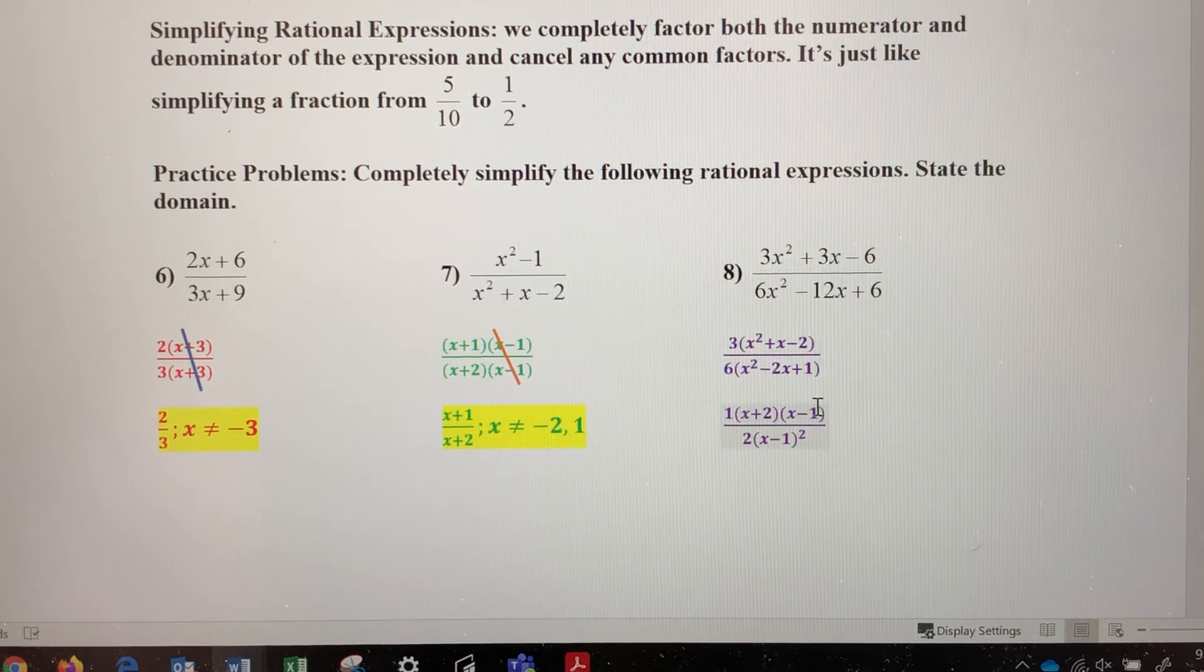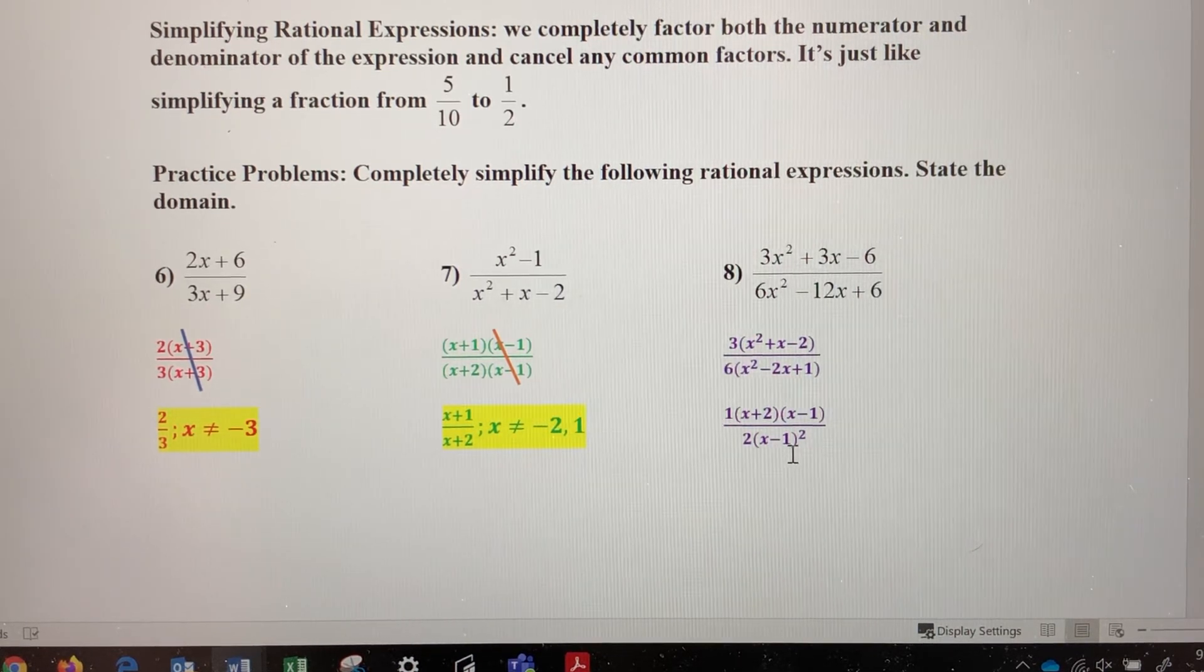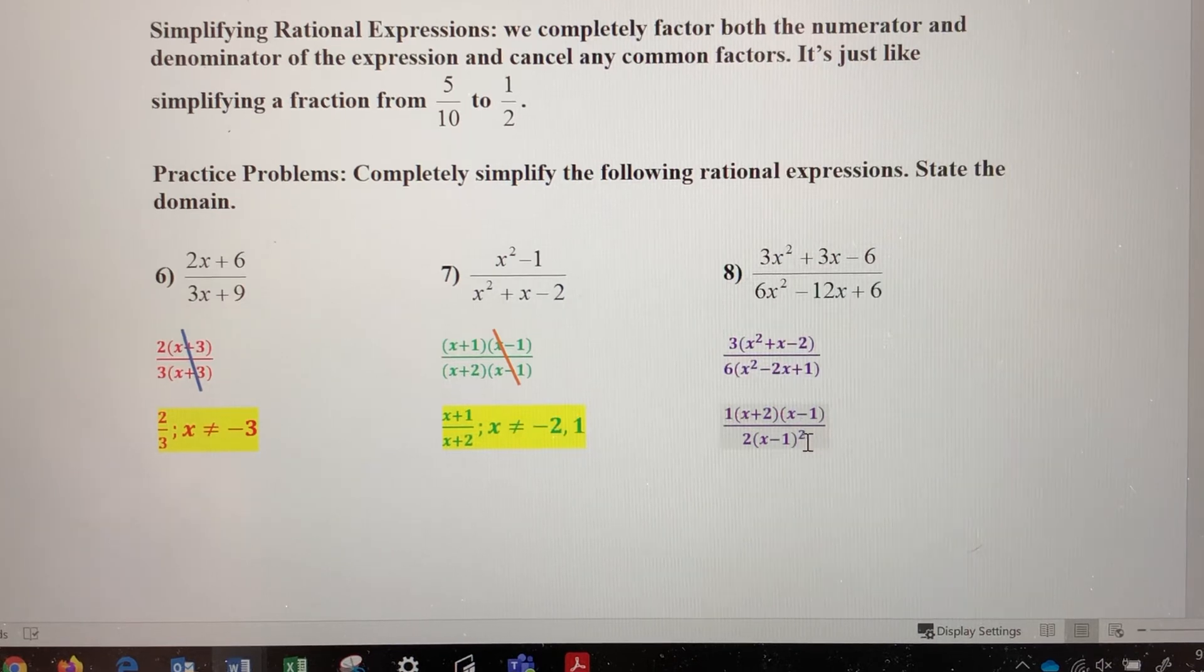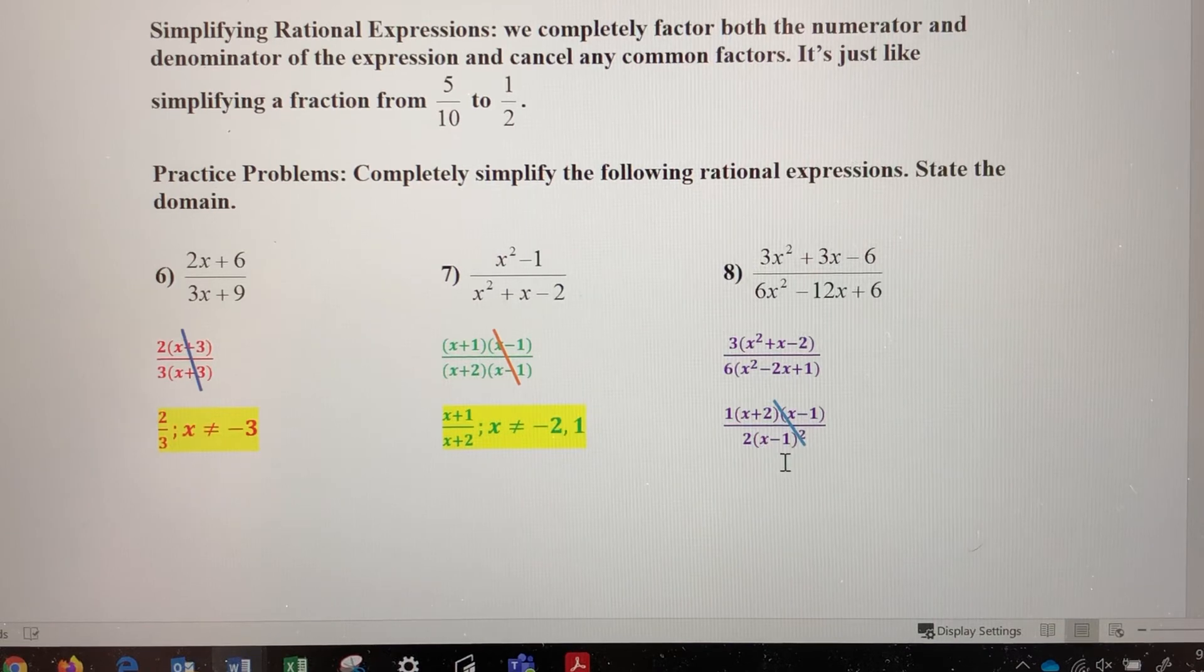Now, there's one x minus 1 factor here. There are two here. So I'm going to cancel out one of these with one of these. Notice that one of these x minus 1s is still there.